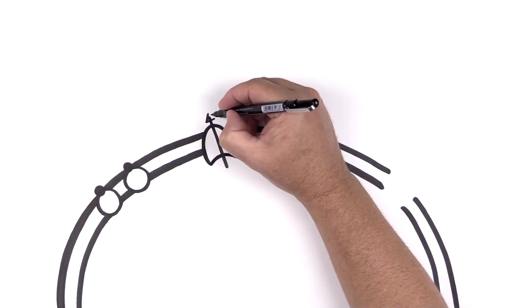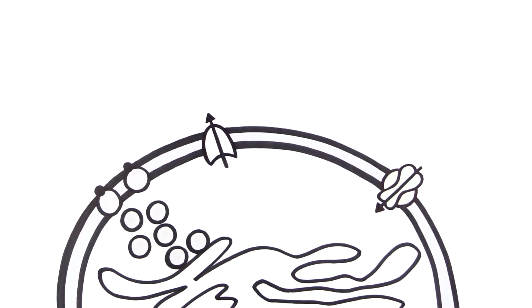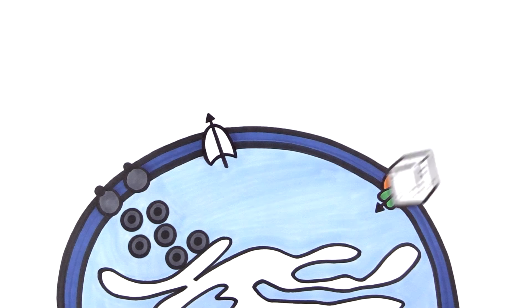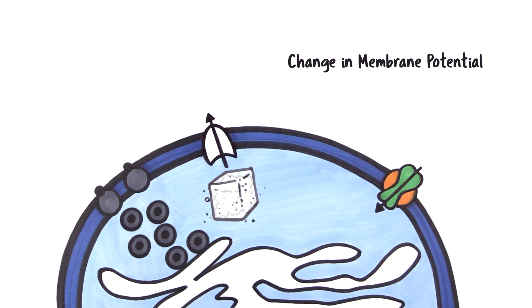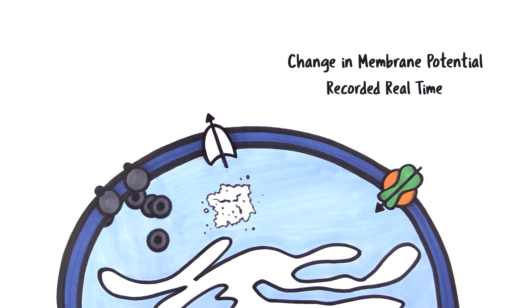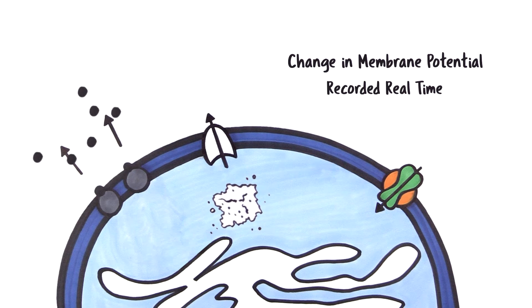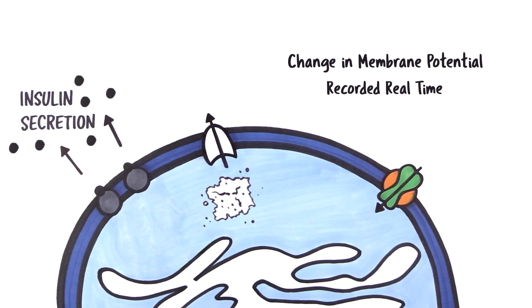Before the islet can release insulin, channels in the membrane open and exchange ions. The resulting current flow leads to a change in the membrane potential. This signal is recorded with BetaScreen in real-time while the islet regulates its insulin secretion.